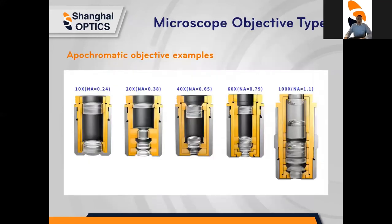Here are some examples of apochromatic lenses, which are corrected for three colors. In the images you see the magnification and numerical aperture for each objective. These objectives are complicated and consist of many lens elements in the lens barrel. The higher the NA, the greater the amount of elements used, and the higher the resolution.